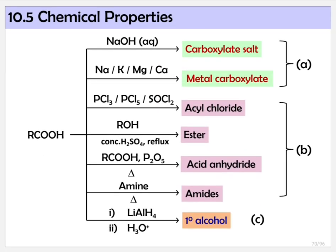This is the summary of the reactions. For reactions with NaOH and metals, these involve cleavage at hydrogen — so hydrogen will come out and be substituted by something from the reagent. The purple-colored ones involve cleavage at the OH group — OH will come out and be replaced by something from the reagent. There are 4 reactions for OH group substitution, and the last one is reduction using lithium aluminium hydride and hydrolysis.